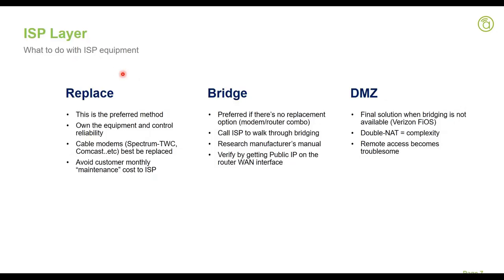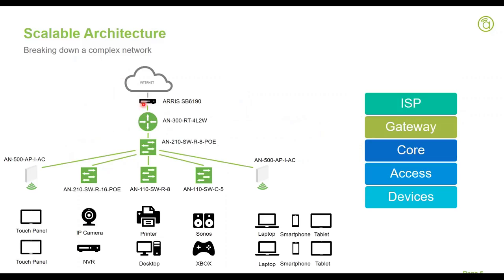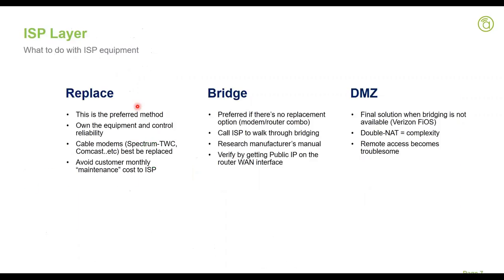Starting with the ISP layer — the modem. When it comes to modems, you have three options: replace, bridge, or DMZ. The replace option is our preferred method. Whenever possible, swap out the modem that comes from the ISP with one that you own. This way you get a higher quality modem, you can guarantee its performance, and you own it. For cable modems in areas with Spectrum, Time Warner, or Comcast, it is really preferred to swap those cable modems with something you can buy off Amazon — ARRIS Surfboard is a very reliable modem.